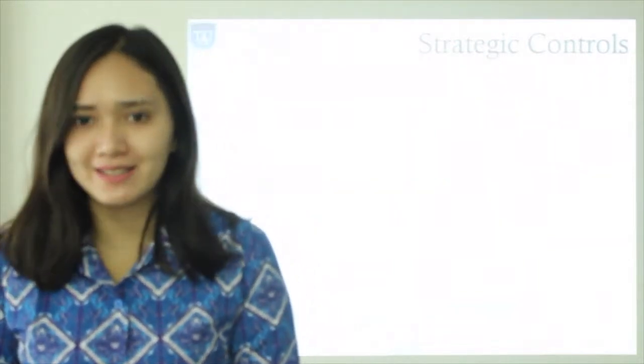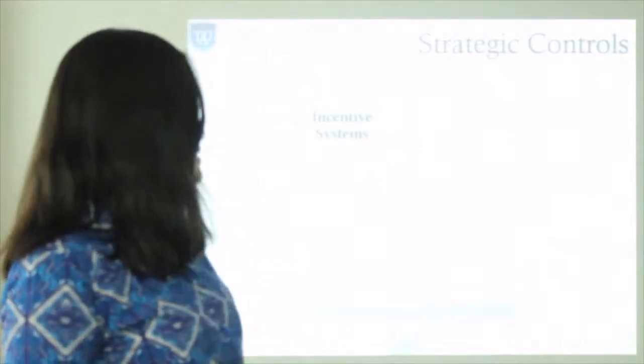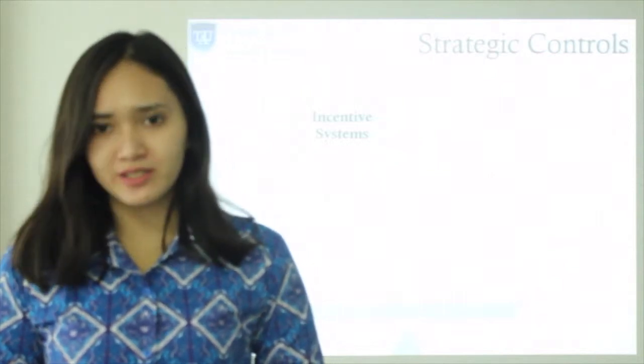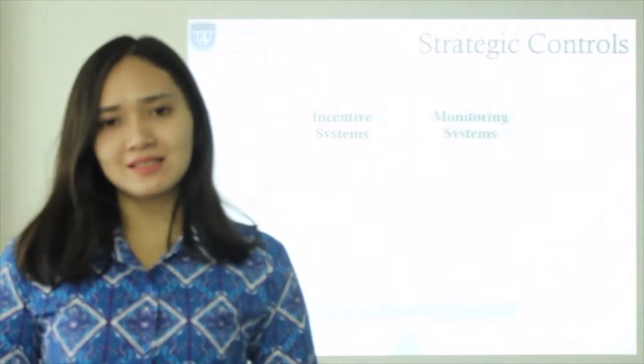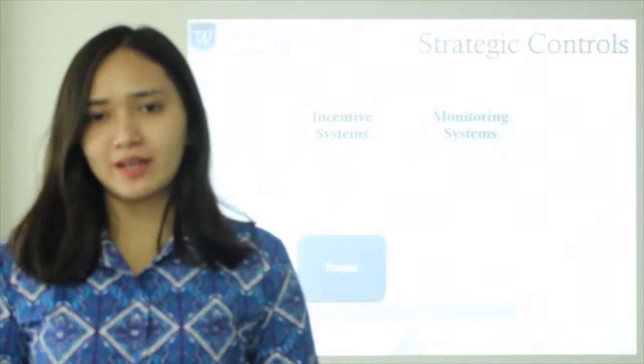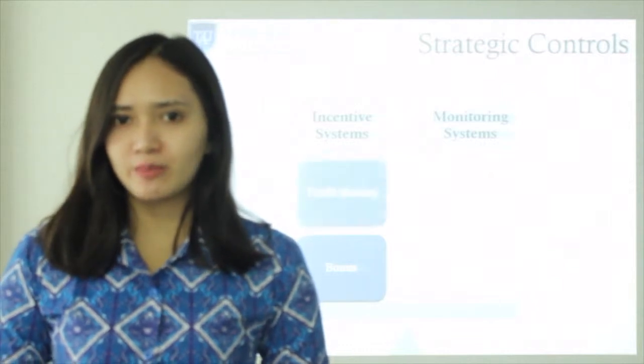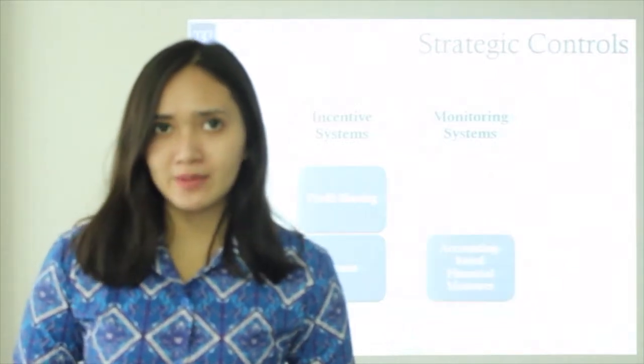The next one is strategy controls. In strategy controls, we use two systems. The first one is incentive systems. And then, the second one is monitoring systems. The incentive systems, we use bonus or profit sharing. Meanwhile, in monitoring systems, we use accounting-based financial measures or activity-based variables.